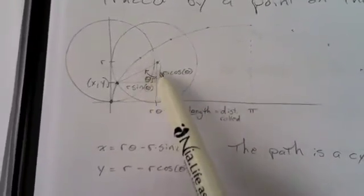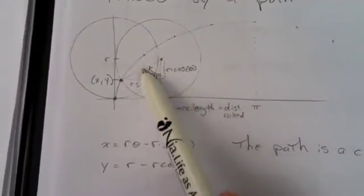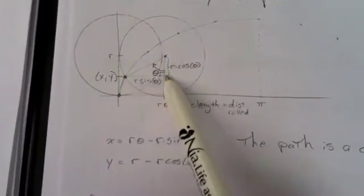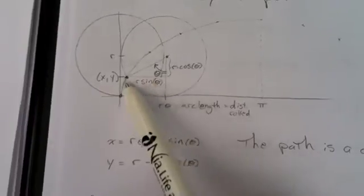Think about your trigonometry. This would be the adjacent side to that angle. So this side here would measure r cosine theta. This is the opposite side, so it would be r sine theta right there.